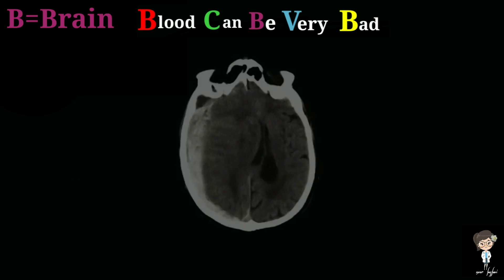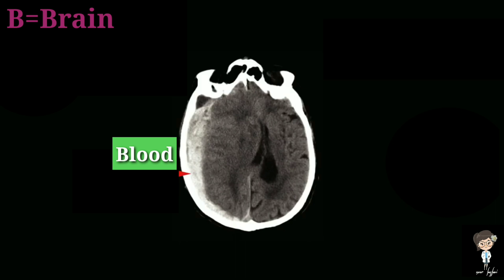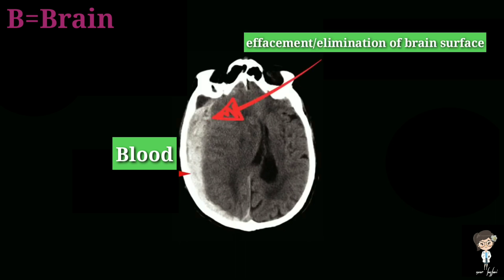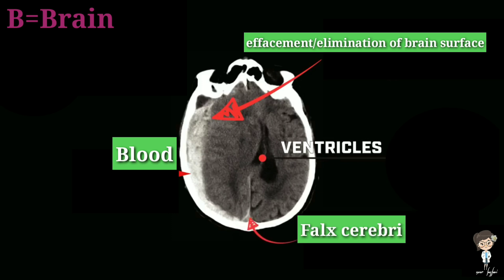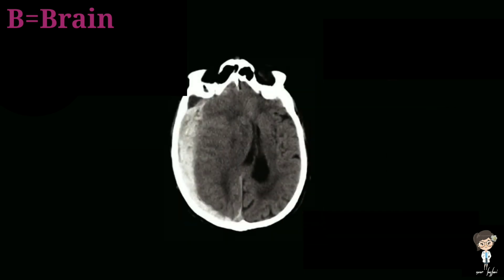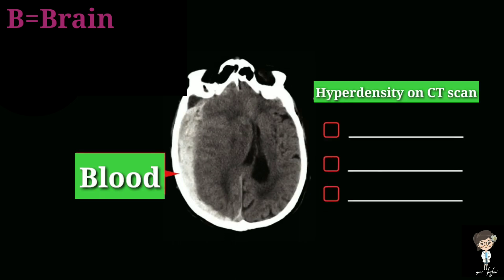The next B of the mnemonic stands for Brain. We will look for the presence of blood, which will cause effacement of the brain surface. After this, we will see the symmetry of cisterns and ventricles. We will also observe the falx, which should be in the midline. On CT scan of brain, blood pooling appears as hyperdensity. Other things that can appear as hyperdensity on CT scan brain are bone, calcification, and IV contrast.